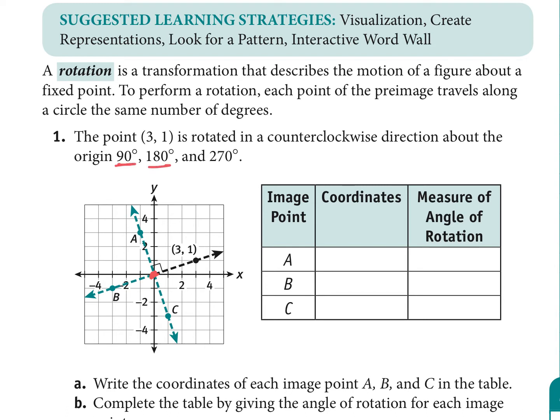We're going to talk about rotating 90 degrees, 180 degrees, and 270 degrees, because in between those it's much more difficult to determine where a point will end up. For example, with point (3, 1) as our initial point, if it's rotated 90 degrees counterclockwise — that means up and to the left — we can observe where it lands.